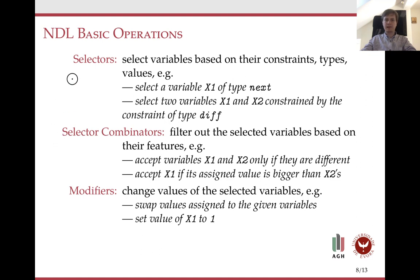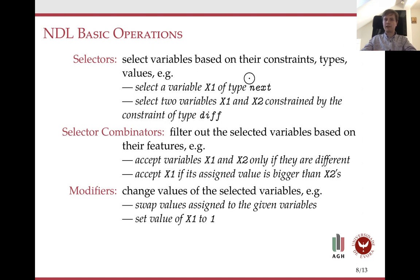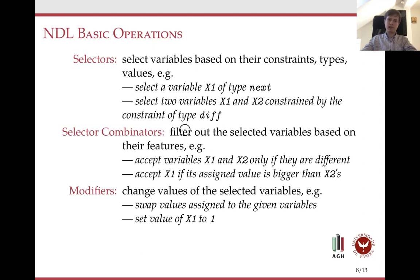NDL consists of three basic types of operations. The first are selectors, like SELECT in SQL. We can select variables based on their features such as constraints, types, and values. For example, we can select a variable of type 'next', or select two variables x1 and x2 given that they are constrained by a constraint of type 'diff'.